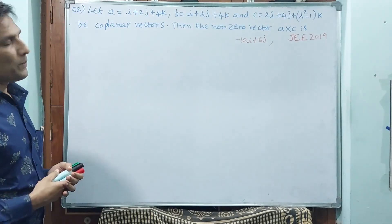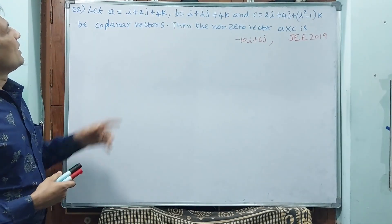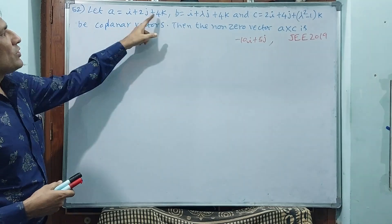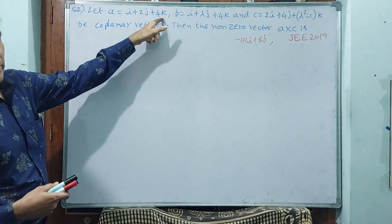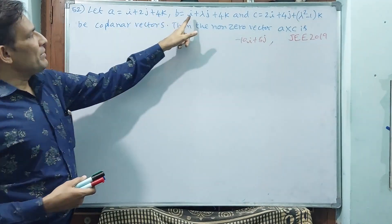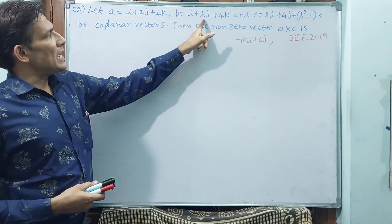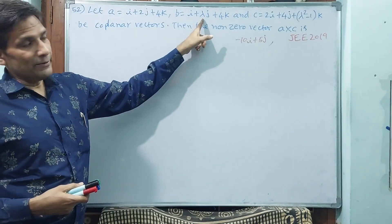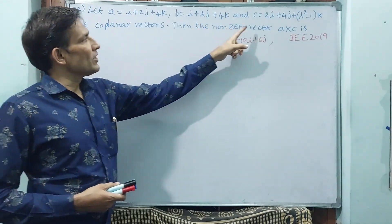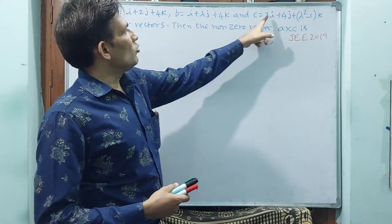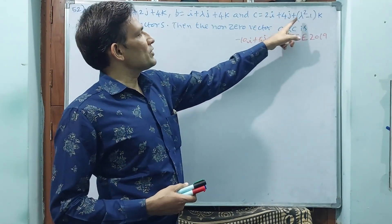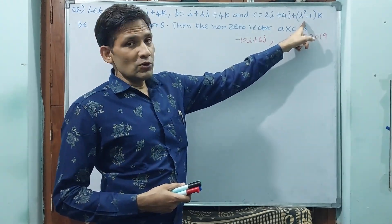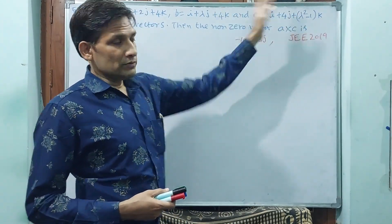Question number 52. Vector A is equal to i plus 2j plus 4k. Vector B is equal to i plus lambda j plus 4k, where lambda is unknown. C is equal to 2i plus 4j plus (lambda squared minus 1)k, and lambda is also unknown.